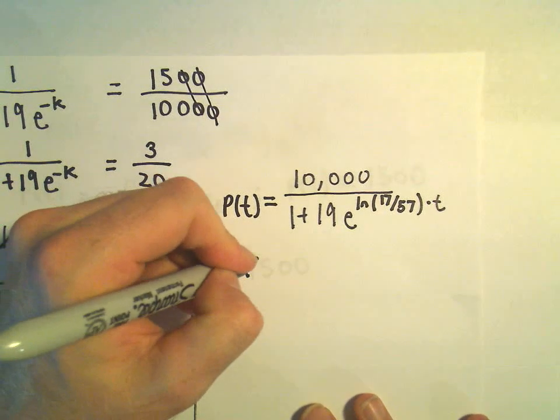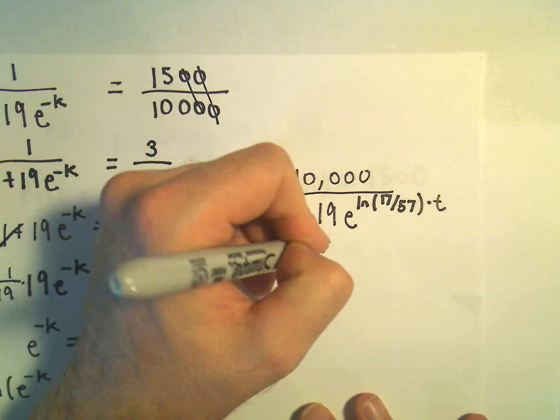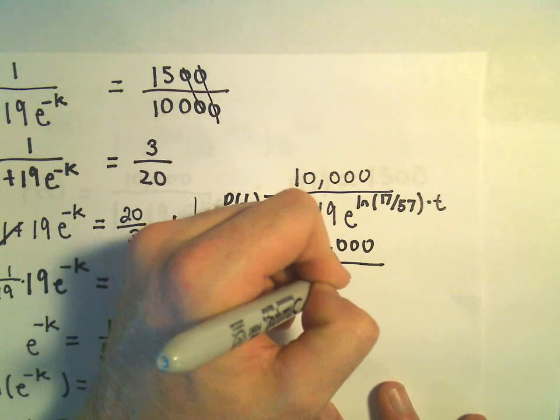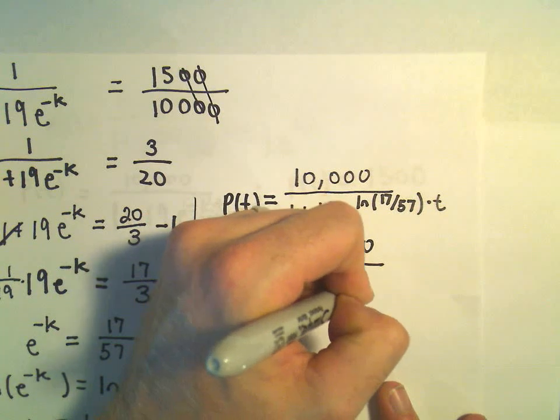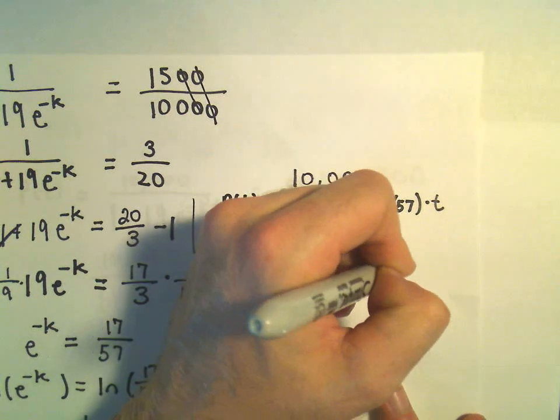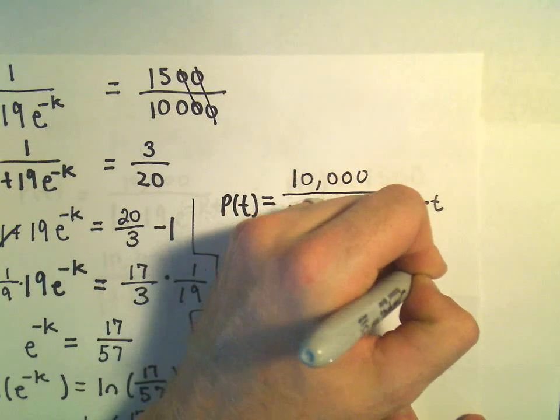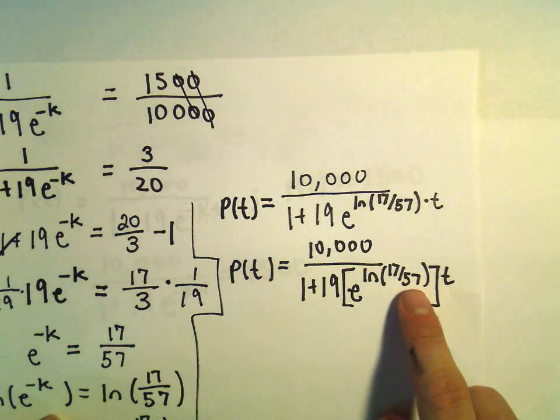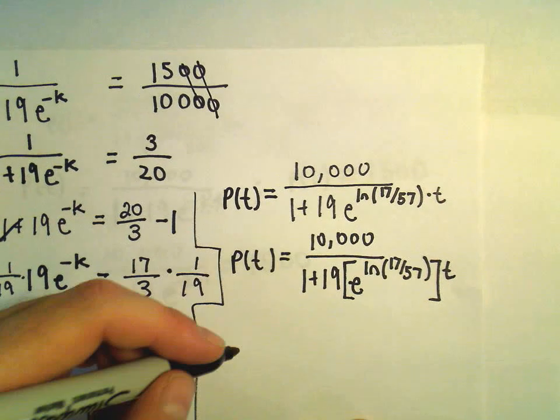So this is P(t) equals 10,000 over 1 plus 19. Again, we could think about this as being e to the ln of 17 over 57, all of that being raised to the t power because you just multiply the exponents.